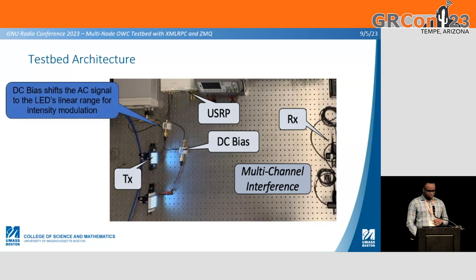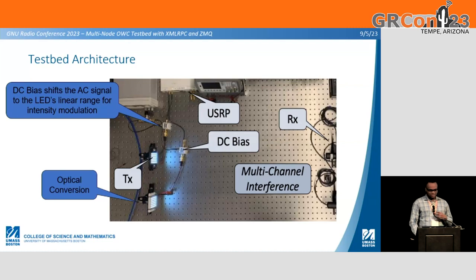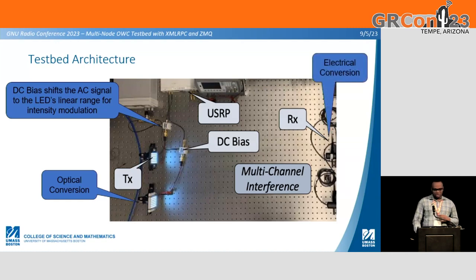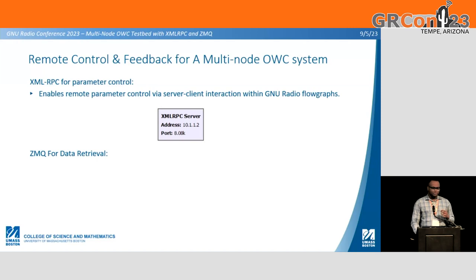In the testbed architecture, we employ a DC bias because we need to shift the AC signal from the USRP into the LED's linear range, as we use the LEDs for intensity modulation. We perform optical conversion as we send signals into the LED array for the TX LED arrays. From the receiving end, we use electrical conversion from the photo sensor into the GNU Radio flow graphs. Remote control and feedback for a multi-node OWC system is very useful, and XMLRPC is very useful for parameter control.